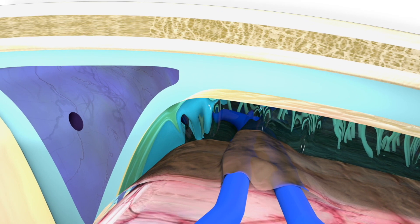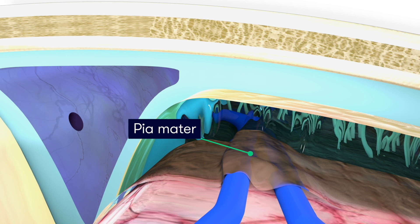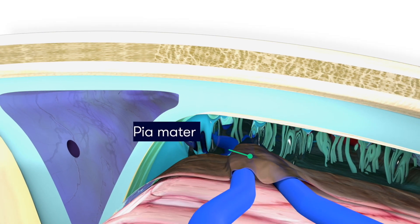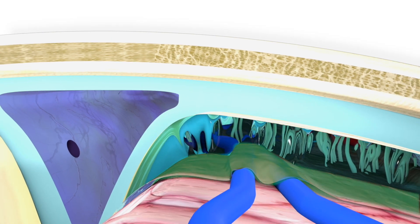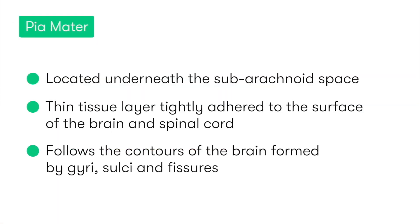Continuing inwards, the final meningeal layer is the pia mater. This is located underneath the subarachnoid space and is a very thin tissue layer which is tightly adhered to the surface of the brain and spinal cord. The pia is so closely adherent to the brain that as it covers and protects the brain and its blood vessels, it actually follows the contours of the brain which are formed by the gyri, sulci, and the fissures.